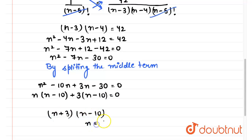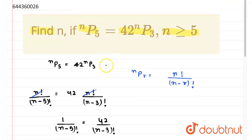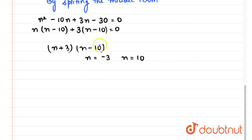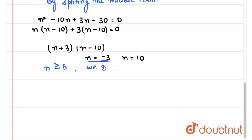So n is equal to minus 3 or n is equal to 10. We have two values for n. Since the question states that n must be greater than or equal to 5, we neglect n equals minus 3. Therefore n equals 10, and that is our final answer.